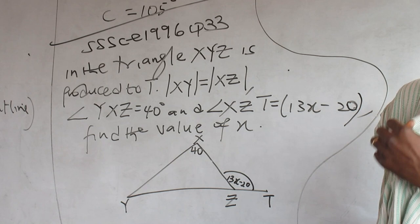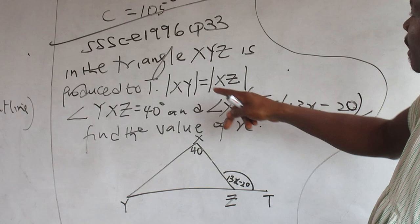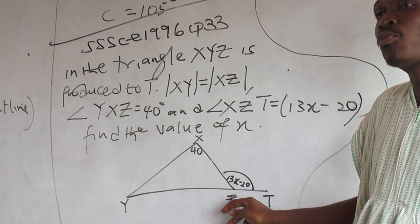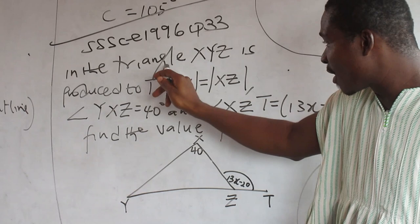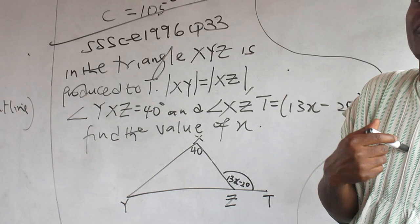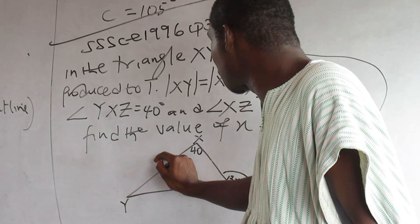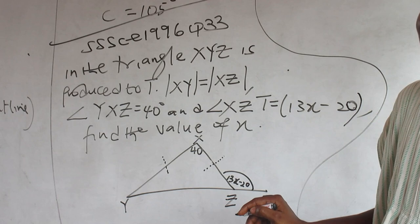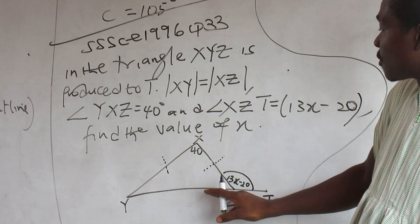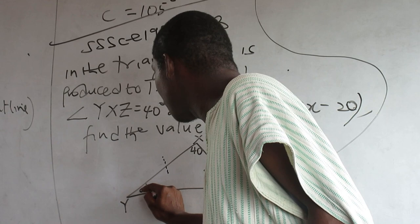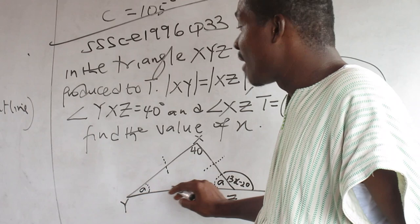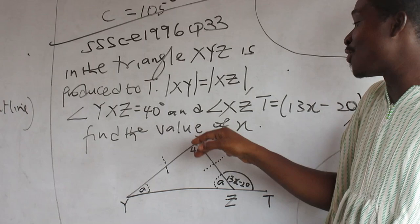Application. In the triangle XYZ is produced to T. XYZ produced or extended to T. The length of XY is equal to the length of XZ. Once I've been told that this side is equal to this side, it's an isosceles. So I can mark that. In the introduction I do on my drawing, I used a broken line so that it did not look as if it was there before. So once it is an isosceles, you know the angle here can be equal to the angle here. Do you agree? Why? Isosceles base angles are equal.